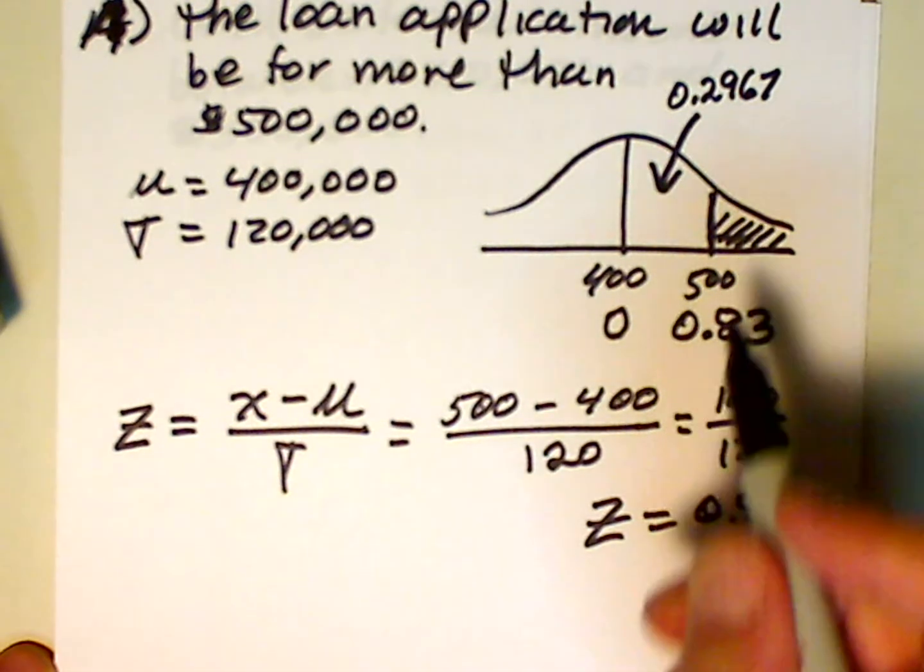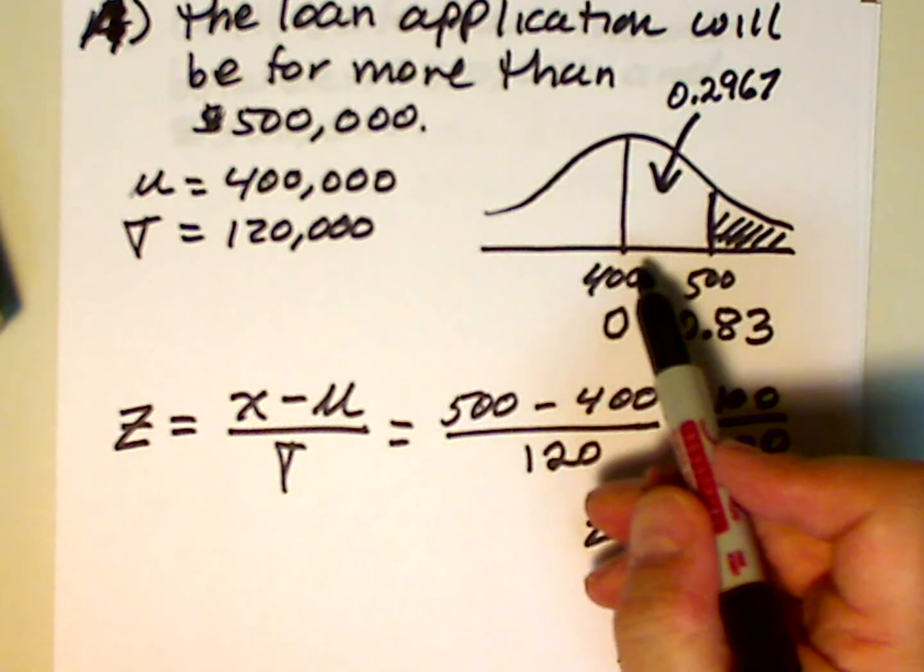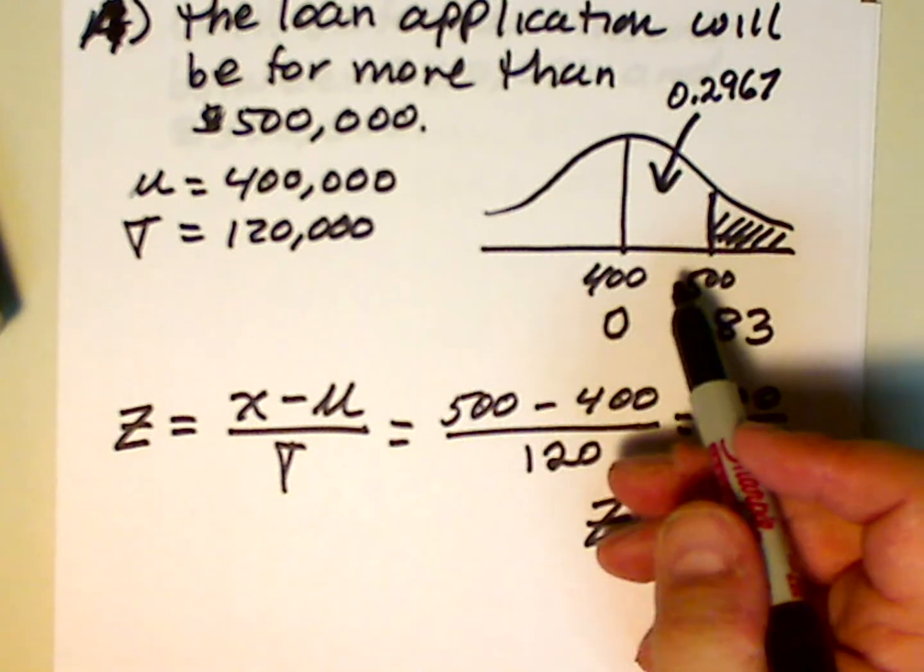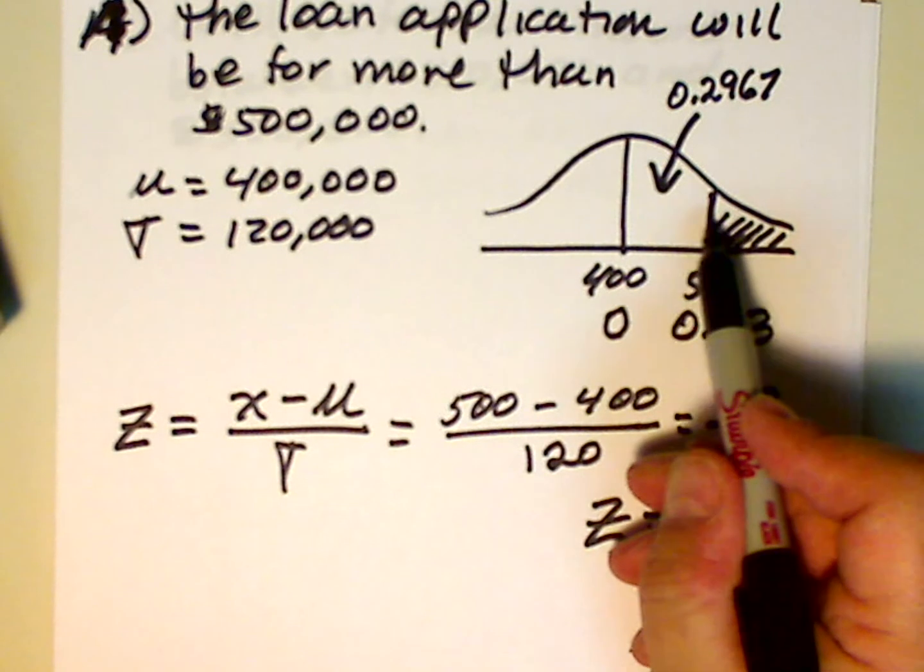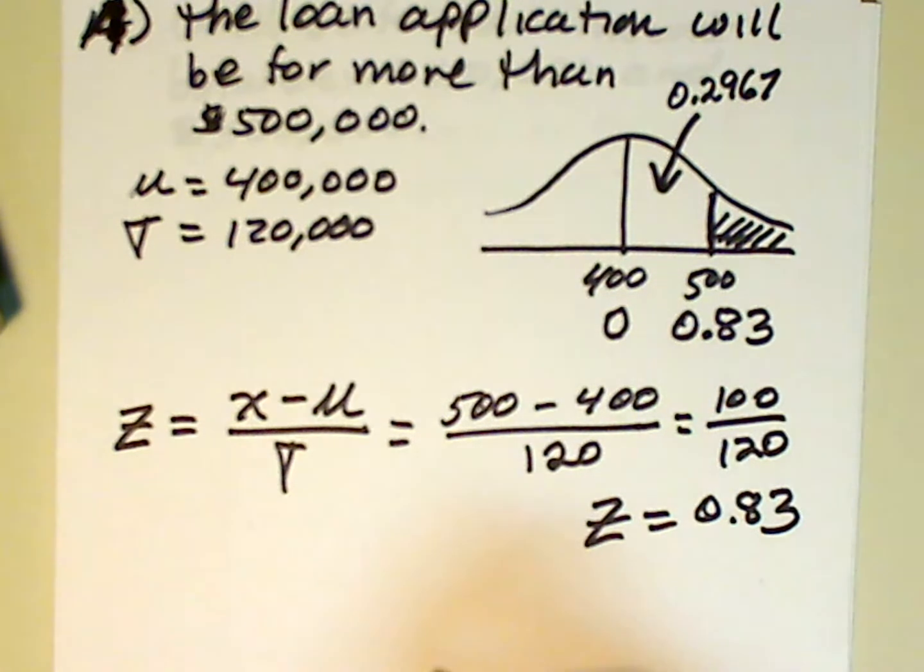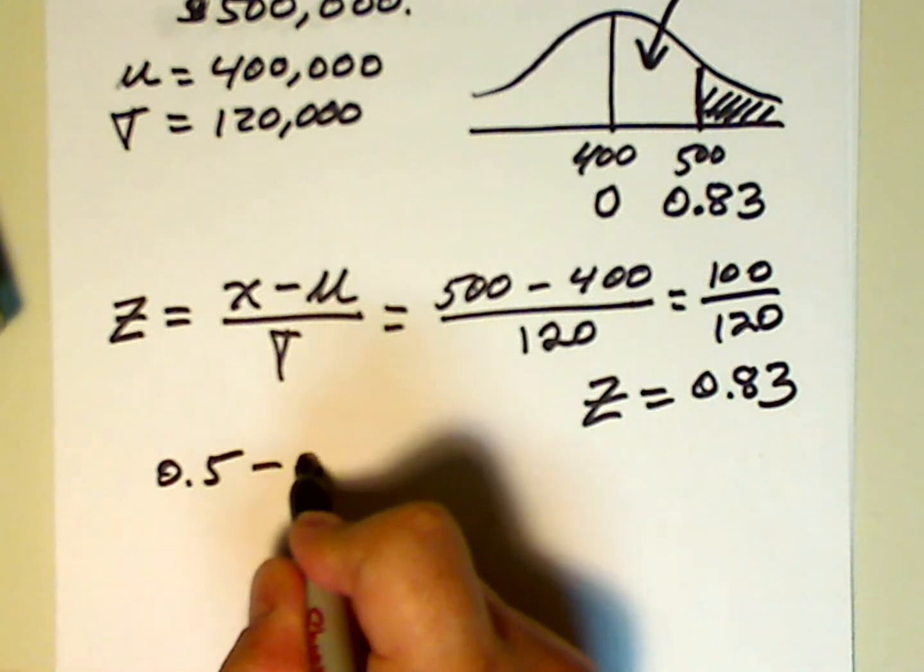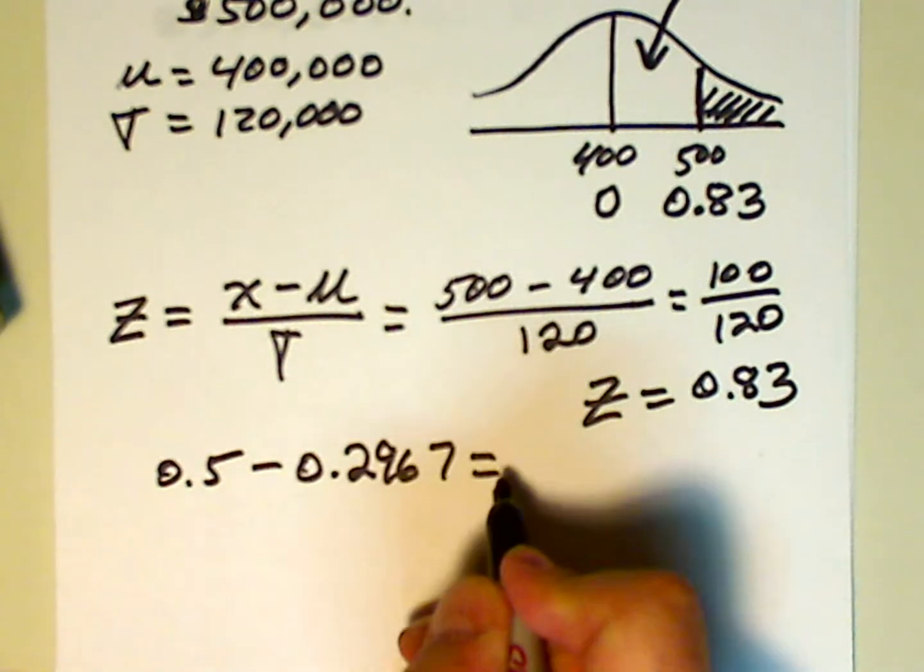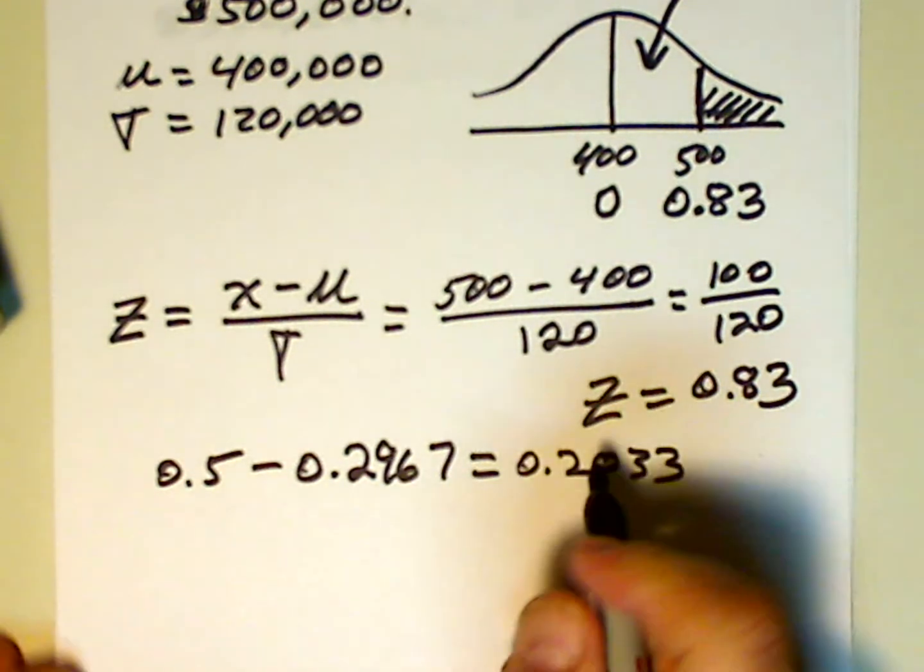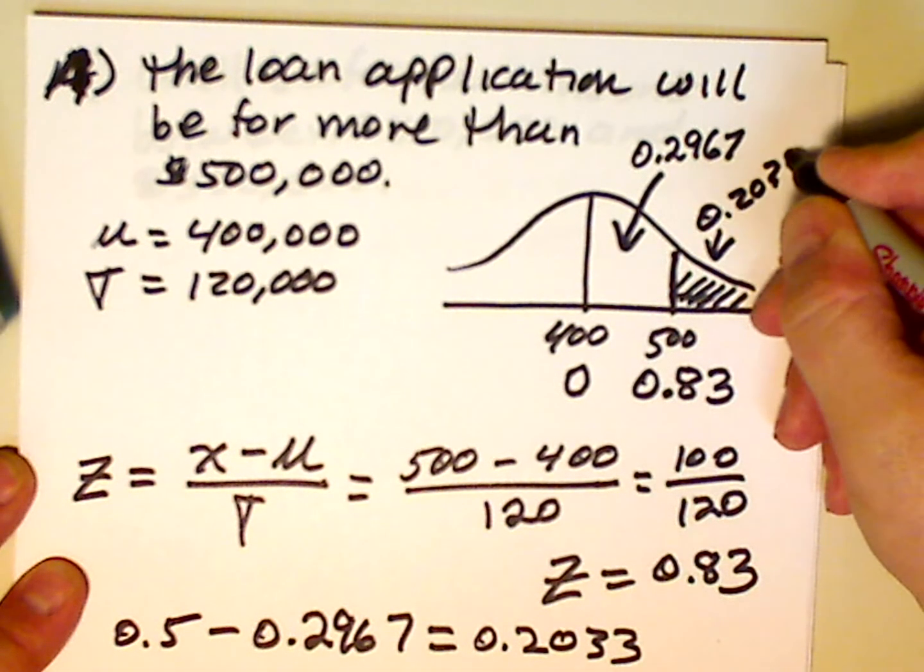That doesn't give us this area though. The total area under the normal curve is 1.0. The total area to the right of the mean is 0.5. And the total area to the left of the mean is 0.5. We're interested then in subtracting this area from 400 to 500 from 0.5. And that will leave us with this area in the right-hand tail. So let's do that. 0.5 minus 0.2967, and that is equal to 0.2033. So this area is 0.2033.